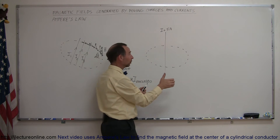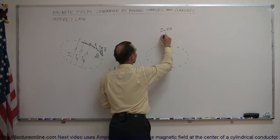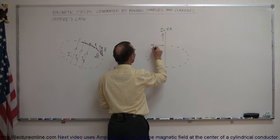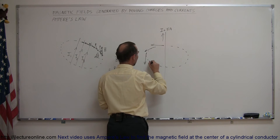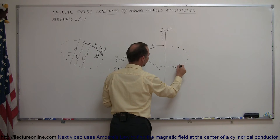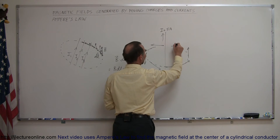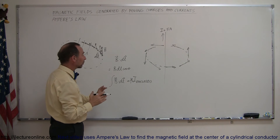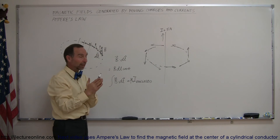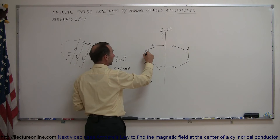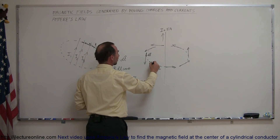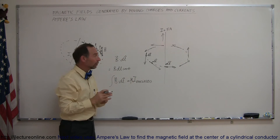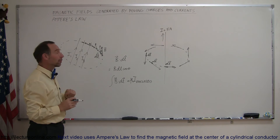The B field — using the right-hand rule, if we point the thumb in the direction of the current, let's say the current is upward — we can see that the B field would be perpendicular to that, so everywhere along the curve the B field would be exactly perpendicular to that imaginary circle. And since the B field doesn't change in magnitude anywhere along the field, and the direction of the B field is always parallel to the direction of the little line segment dl placed there in each case, this becomes a very practical equation.